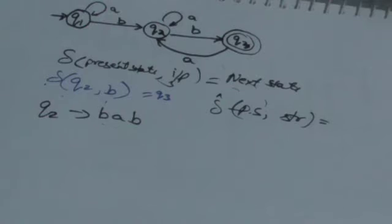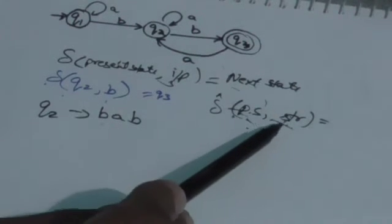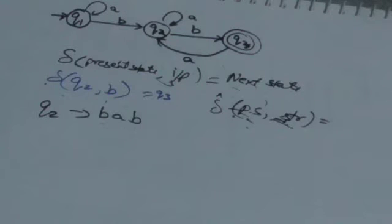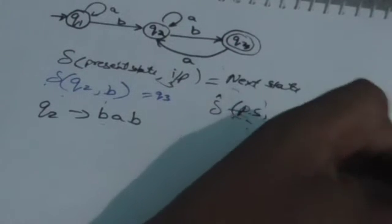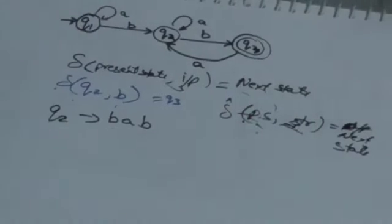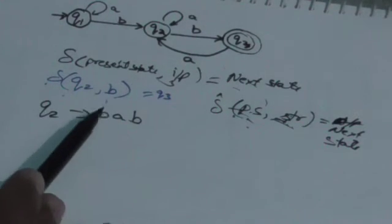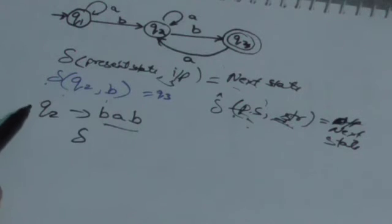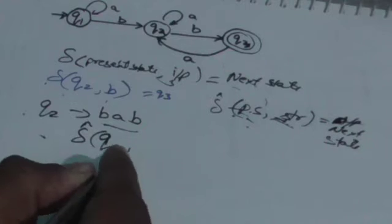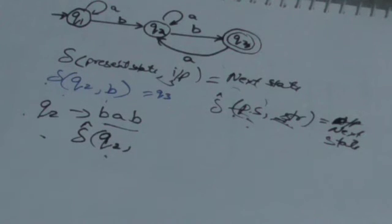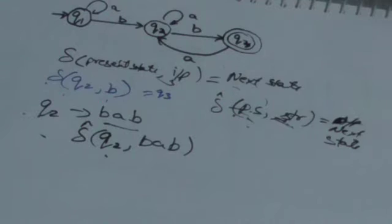The extended transition function gives as output where the machine would be after reading the string from the present state. Suppose the machine is in a present state and reads the string 'str' — the state it reaches after reading that string is the output of this function. Now, to find where the machine would be after reading the string BAB with current state Q2, we will use the extended transition function. Its first parameter is the present state Q2, and the second parameter is the input string BAB.